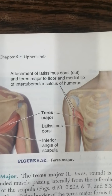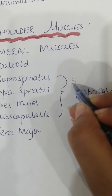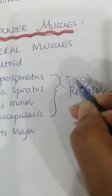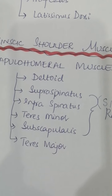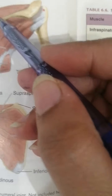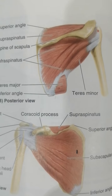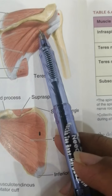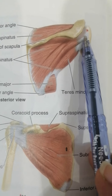Up till now we have covered deltoid and teres major. Now we go towards the four rotator cuff muscles: supraspinatus, infraspinatus, teres minor, and subscapularis — collectively termed SITS muscles. The supraspinatus arises from the supraspinous fossa of the scapula and attaches to the superior facet of the greater tubercle of the humerus. Infraspinatus attaches to the middle facet of the greater tubercle of the humerus.